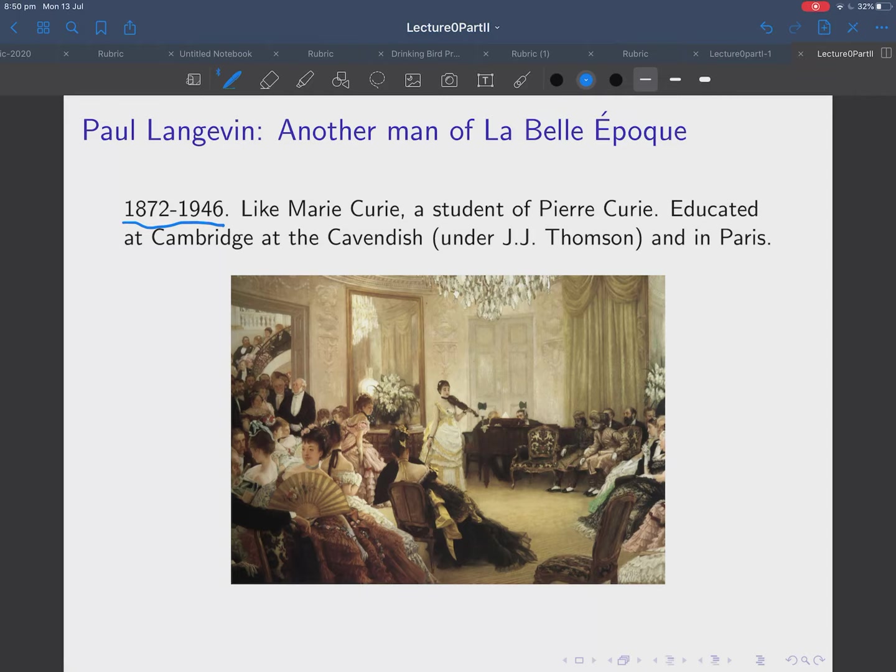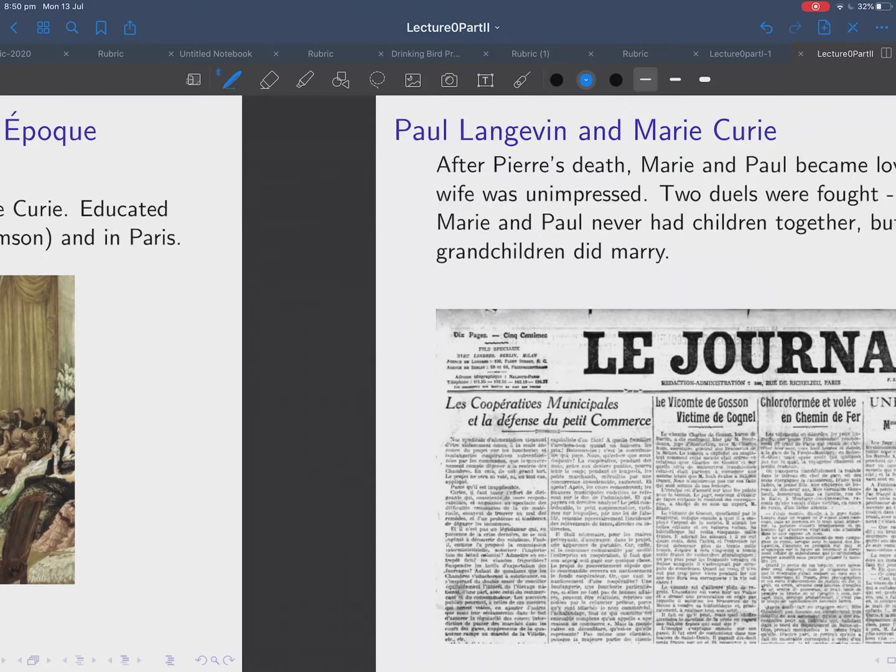And he was, like Marie Curie, a student of Pierre Curie, and he was also a student of J.J. Thompson, so he was educated both in Cambridge and in Paris. Of course, he's a Frenchman originally, and did most of his work in France.